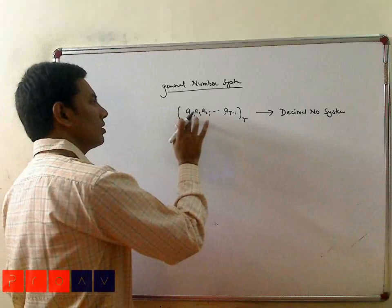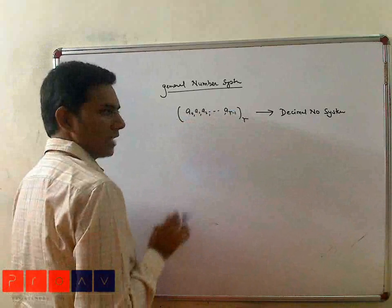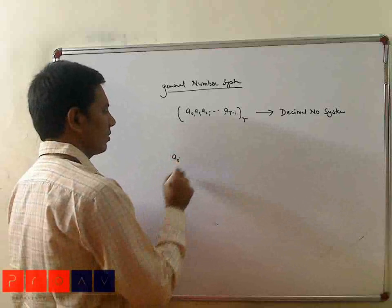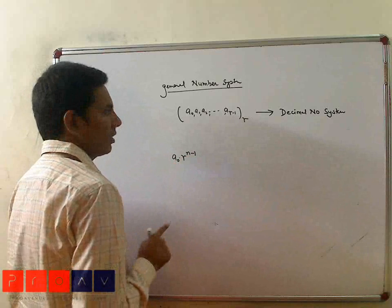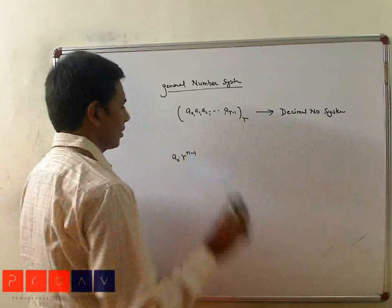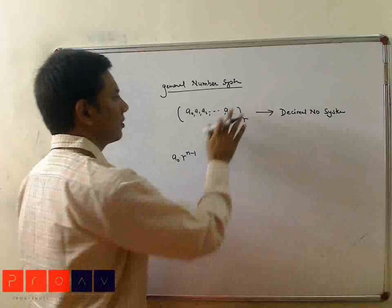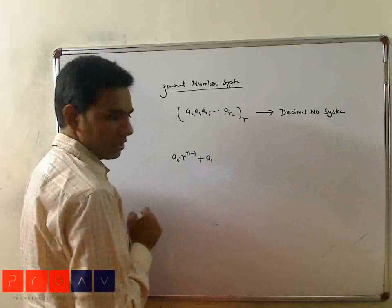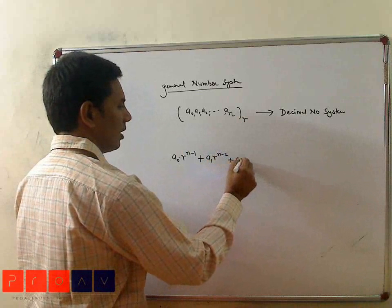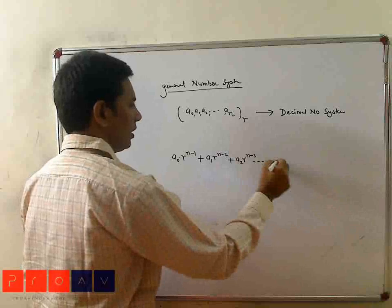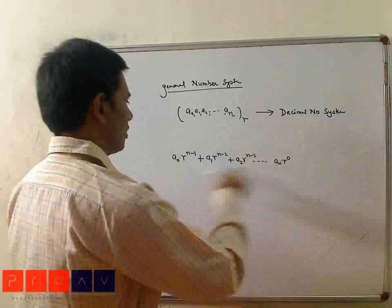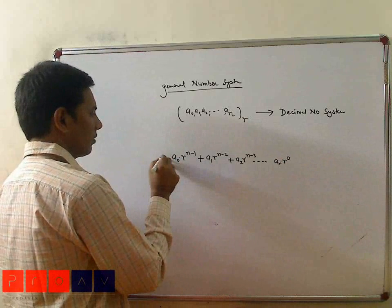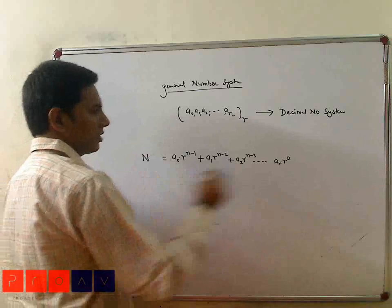It's very simple. We use a0, a1, a2, and a(r-1) as coefficients, and r is the base. Then: first coefficient a0 into r to the power (n-1), where n is the number of digits; plus next coefficient a1 into r to the power (n-2); plus a2 into r to the power (n-3); and so on. The value of this equation, let's call it N, and this N represents a decimal number.